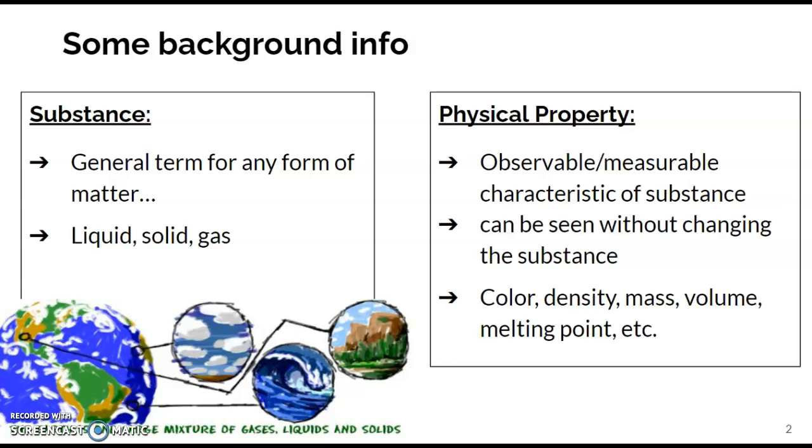Another thing we talked about was physical properties. Density is one physical property we mentioned. But what is a physical property? It is an observable or measurable characteristic of a substance. What is something that is observable or measurable that we can use to define or identify that substance? The trick is it can be seen without changing the substance. So it's not like we're gonna put it through some chemical reaction. It's just a physical property that can be seen or observed or measured without changing it.